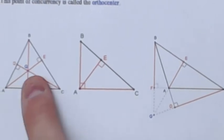See, this is an acute triangle, and you can see that the orthocenter is inside the triangle.